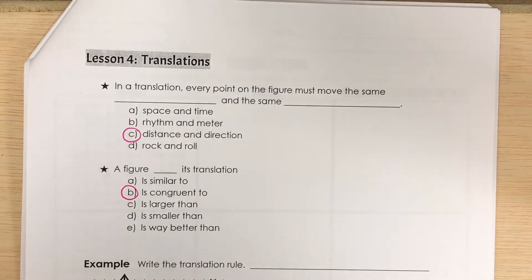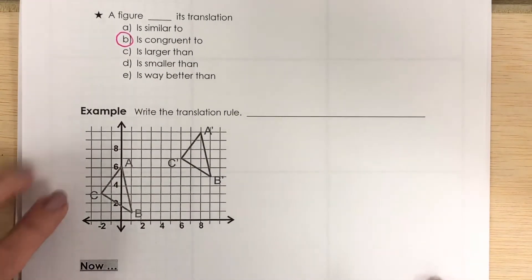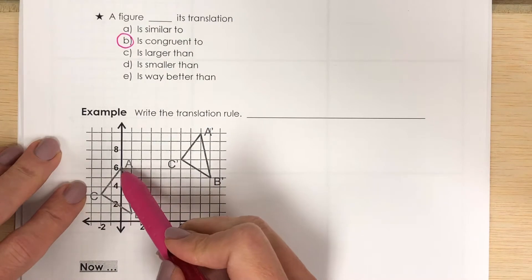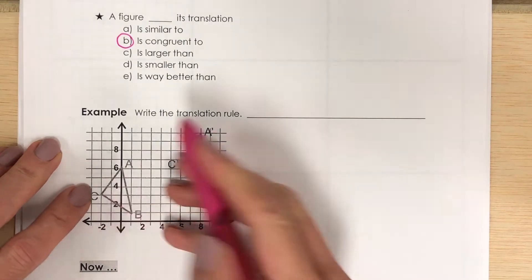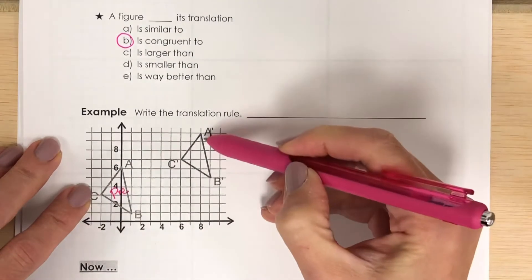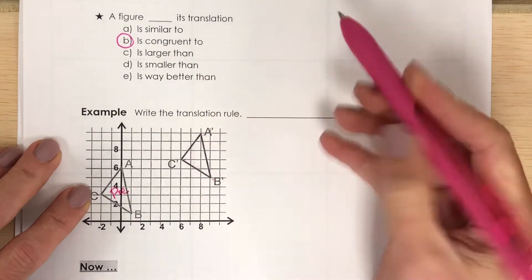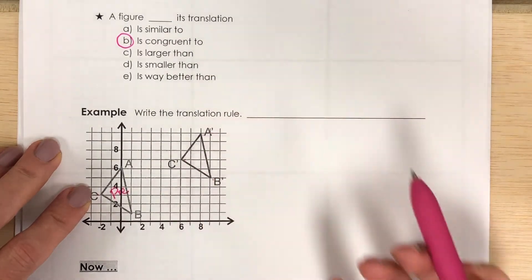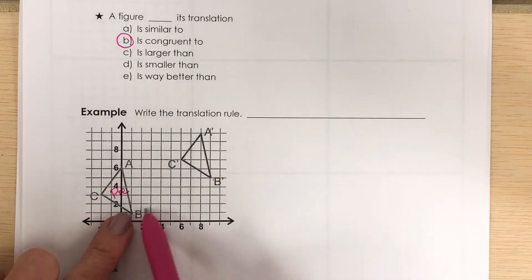Let's write the rule for this one. Let's see, we have triangle A, B, C, that's our pre-image. And then we have triangle A', B', C', that's our image, that's what happened. So we start here and then we move here.